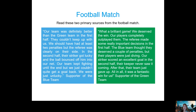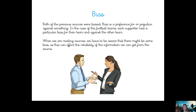So we've got two primary sources of the same football match. One person was supporting the blue team and one the green team. Both accounts are of the same match. But why are they a bit different? Can you think why? They're different because of something called bias. Both accounts were biased — bias is a preference for or a prejudice against something. Each supporter had a bias for their team and against the other team, so the way they saw the match is different.